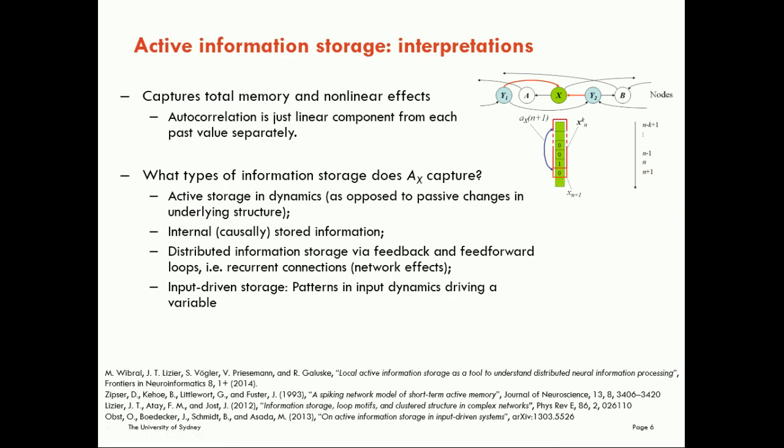We can then think about what types of information storage are being captured by the active information storage here. Firstly, we must understand it's capturing the storage in the dynamics, as opposed to what may be passive changes in the underlying structure. Now here, I'm thinking specifically about neural dynamics. We know that the brain stores information physically by changing the nature of the wiring between neurons. The active information storage is picking up predictive effects in the dynamics. Now those dynamics should reflect underlying passive changes in structure, but they're not directly measuring the underlying changes in the structure itself.